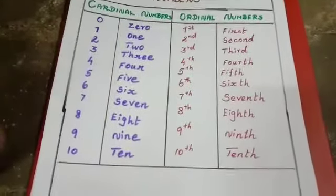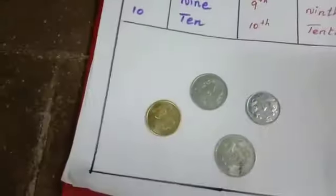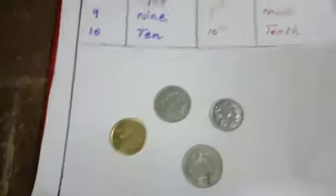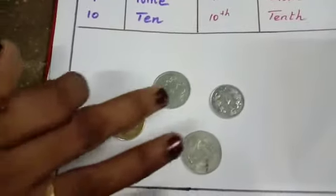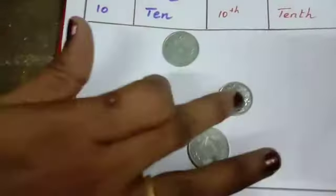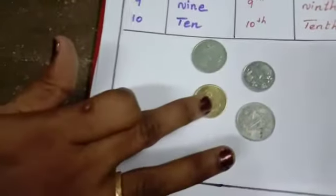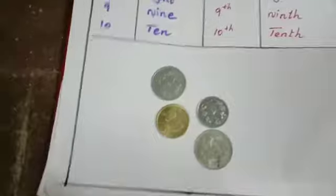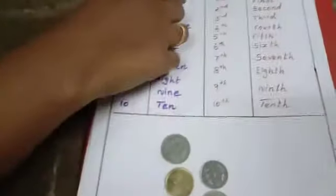How many coins are there? How many coins are there? Count with me: 1, 2, 3, 4. So I have 4 coins. Using cardinal numbers.